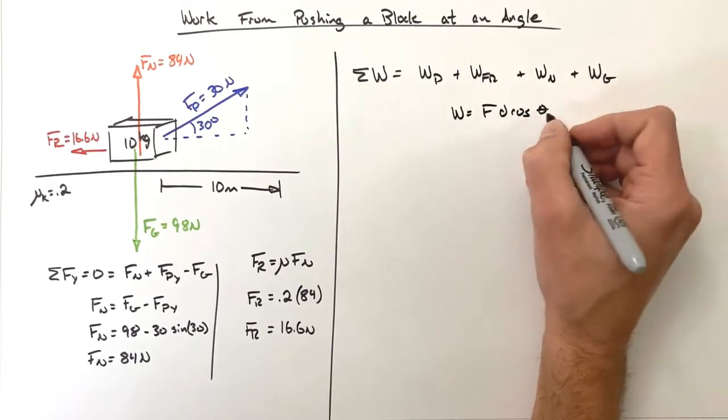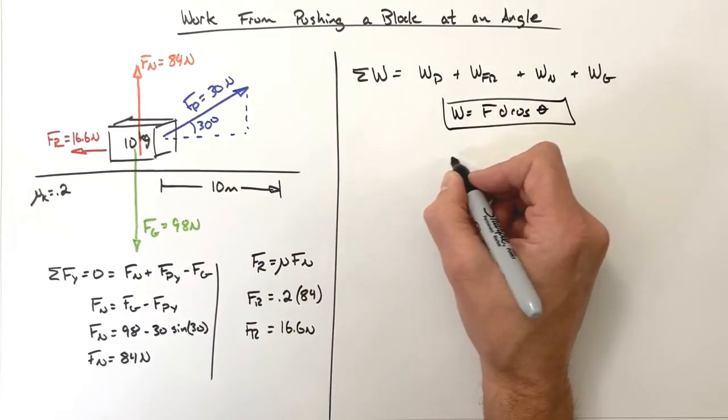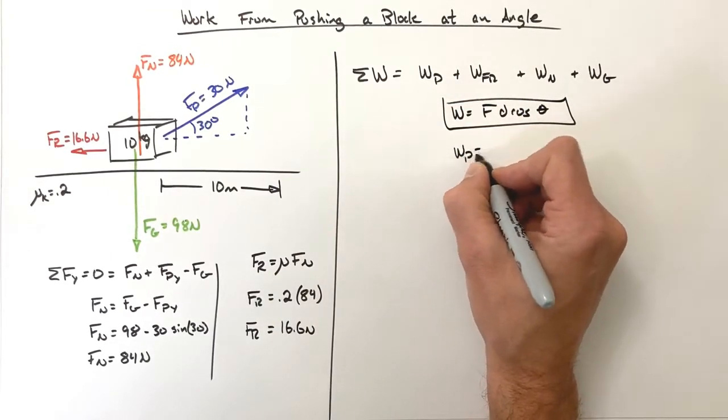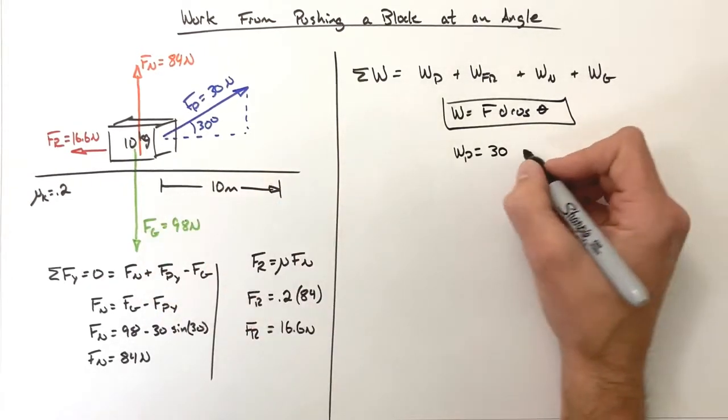Work is Fd cosine theta. Looking at the pull force first, it's going to be 30 newtons acting over a displacement of 10 meters.